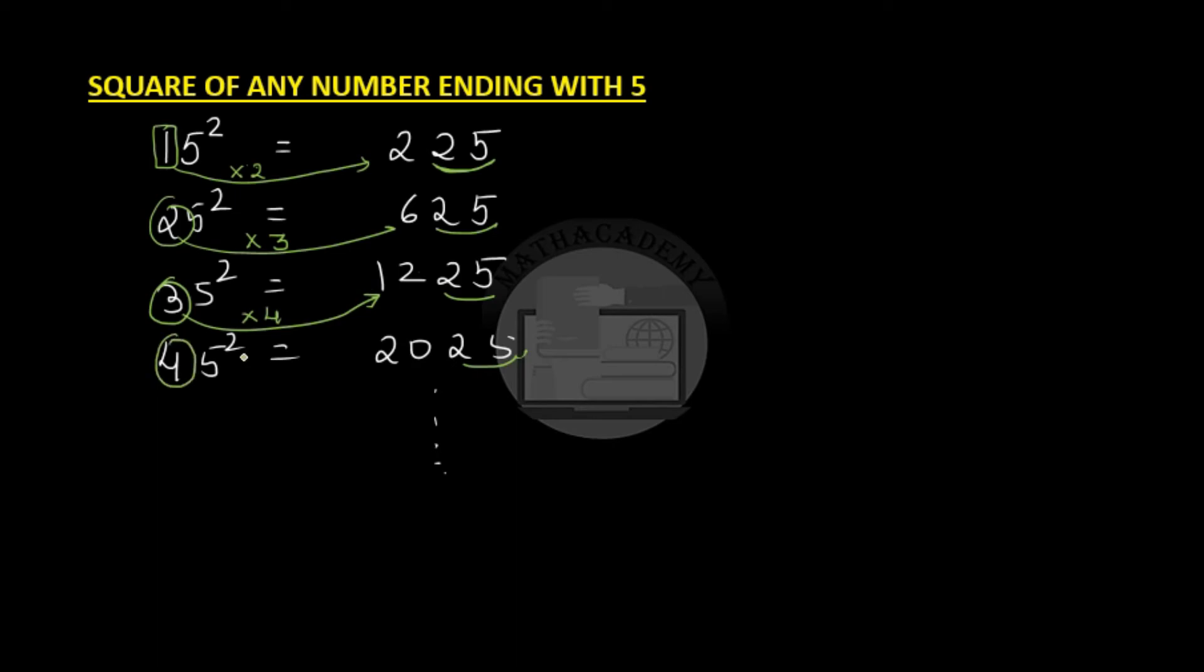45 square, 1 more than 4 is 5 and 4 times 5 is 2025. Similarly, if we try to find out 75 square. So, we will directly write 25. We know that the square will end with 25. Look at all the number formed by the digits remaining.